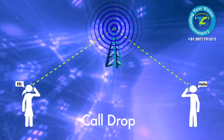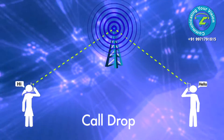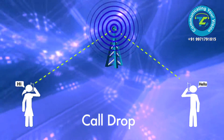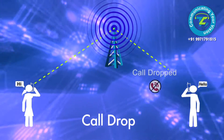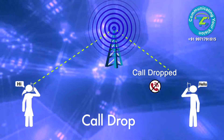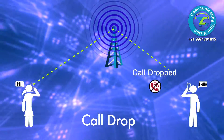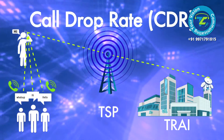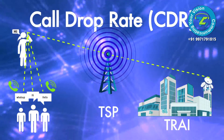What does call drop rate mean? Call drop rate is the percentage of calls which, once they have been correctly established, are interrupted prior to their normal completion by the user. How is call drop rate calculated? Call Drop Rate (CDR) is calculated from the data submitted by the telecom service providers and the data collected by the auditors of TRAI.